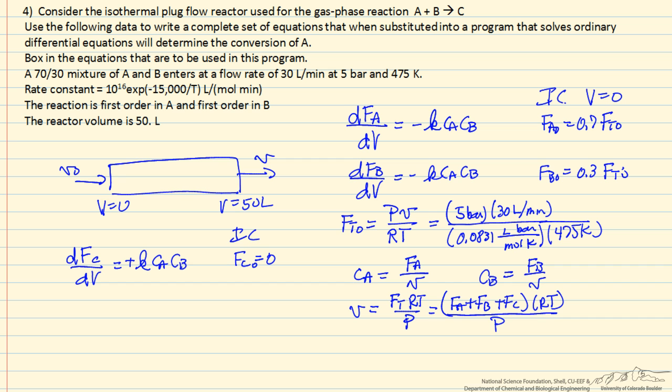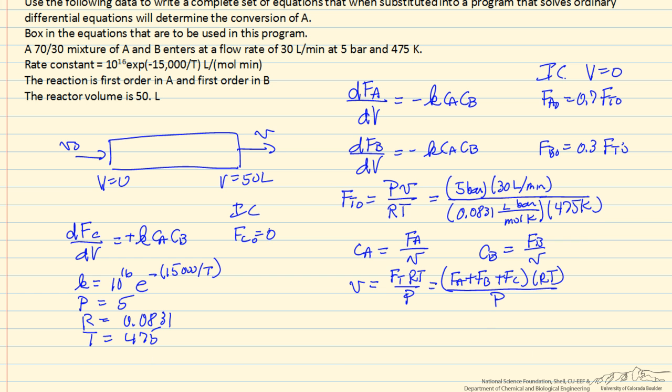So we're almost finished. We need to put in a program the rate constant. We also need to put in the program the pressure. Let's substitute in this equation the gas constant, 0.0831 in these units, the temperature 475. And the last thing we need is telling it when to stop. So the final volume is 50, it starts at V equals 0.